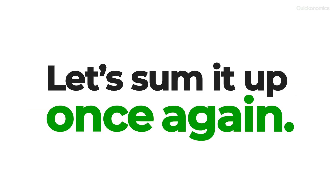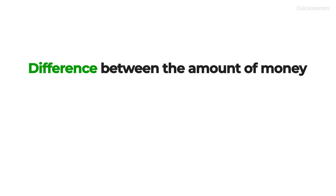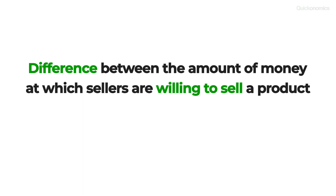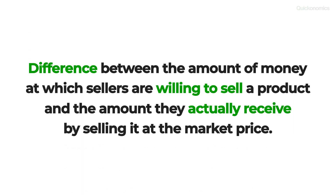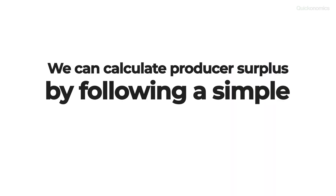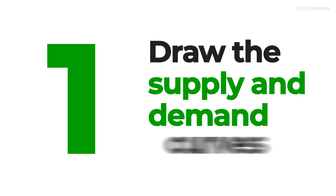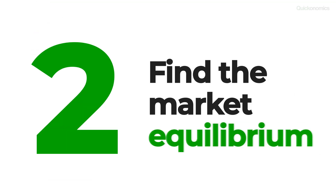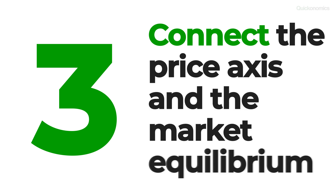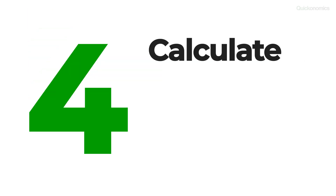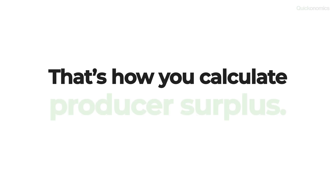So let's sum it up once again. Producer surplus describes the difference between the amount of money at which sellers are willing to sell a product and the amount they actually receive by selling it at the market price. We can calculate producer surplus by following a simple 4-step process: first, draw the supply and demand curves; second, find the market equilibrium; third, connect the price axis and the market equilibrium; and fourth, calculate the area of the lower triangle. And that's how you calculate producer surplus.